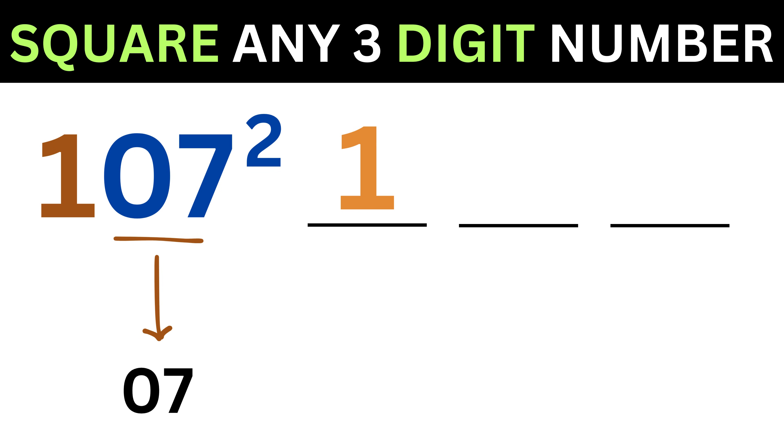Now consider the second part of our number, which is 07, or 7, and square it. We get 49, and thus put it here.